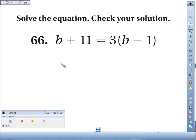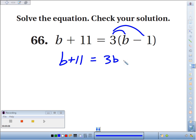Problem 66. Solve this equation: b plus 11 equals 3 times the quantity b minus 1. Use the distributive property to rewrite the right side. 3 times b is 3b, and 3 times negative 1 is negative 3.